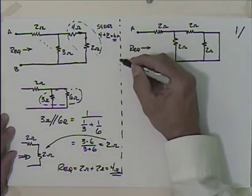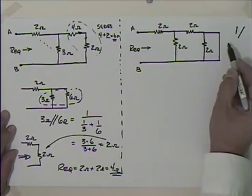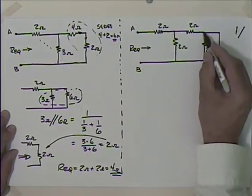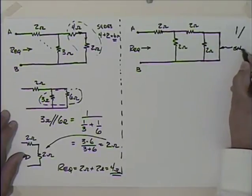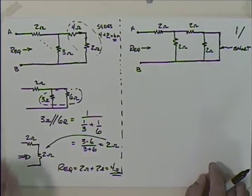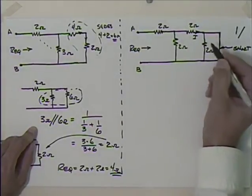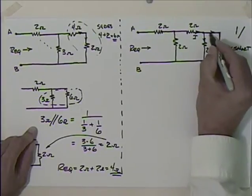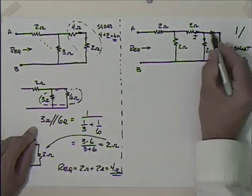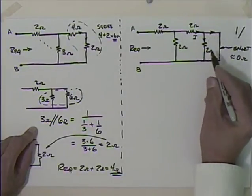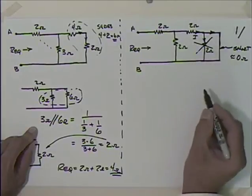This second problem is entirely different. If we go to the far end and start working our way back, we notice a wire going from one point to another — what we might call a short. Maybe someone put a wire in there, maybe water got in. When current comes to that point, it has a choice: go through this 2 ohms of resistance or through virtually no resistance — 0 ohms. Any self-respecting current is going to go through 0 ohms, so we can effectively remove that 2 ohm resistor.